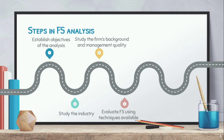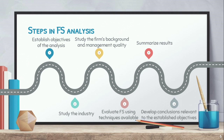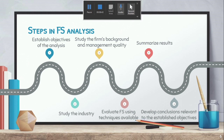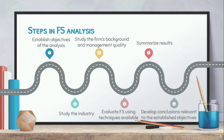The next step is to summarize the results of the studies and evaluation conducted — summarize what we found and what the results of our evaluation using the techniques are. Then the final step is to develop conclusions relevant to the established objectives. From the results we gathered, we develop conclusions based on our objectives and check if they match the objectives we established at the start of our analysis.